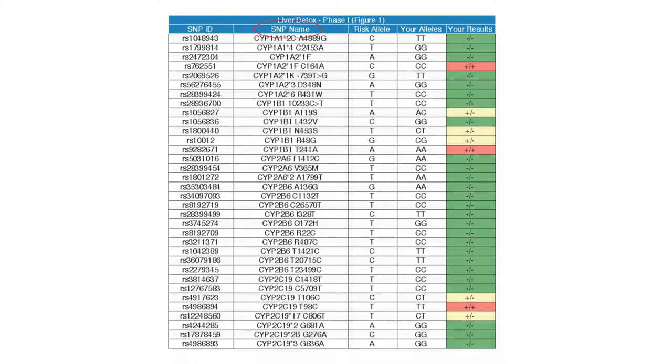The next column represents the SNP name, and in this case, you can see that there is an entire page, in fact two, on CYP, which is cytochrome P450. And then the subtypes - you can see line item one is CYP1A1 asterisk 2C, and line item two is CYP1A1 asterisk 4.